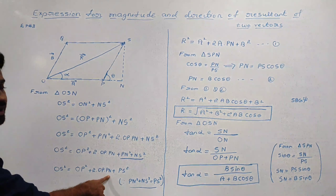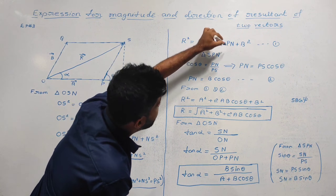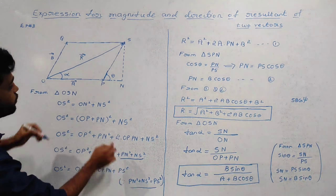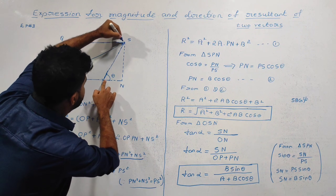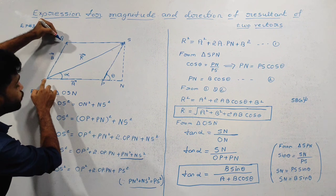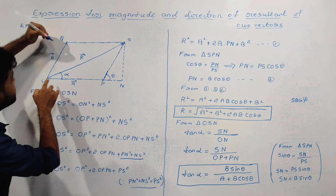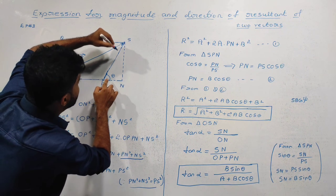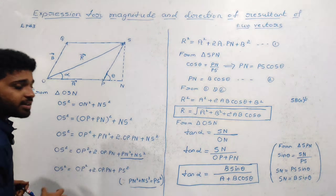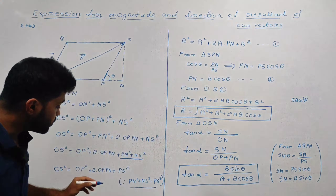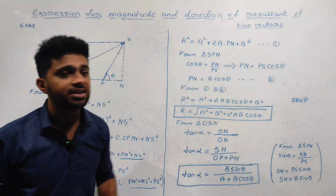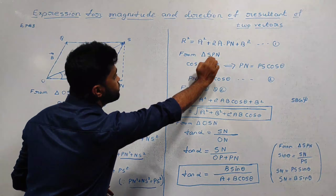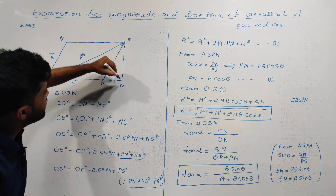So r squared equals a squared plus 2a times PN plus PS squared. Since PS is parallel to OQ, PS equals the magnitude of vector B, so PS squared equals B squared. This is equation number 1. From triangle SPN, if the angle is theta...